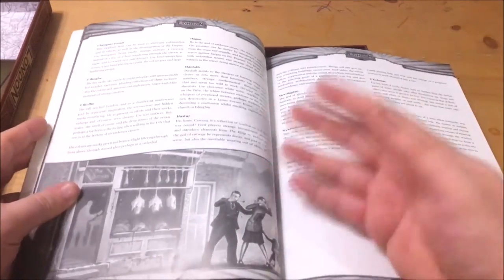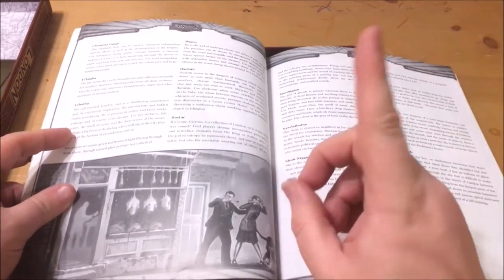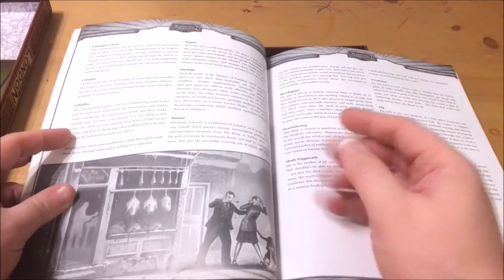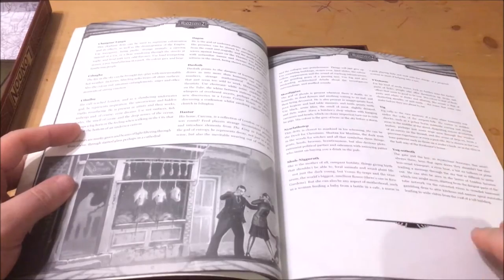It then goes on to discuss the powerful mythos deities and how they can be represented around the city, even allegorically. For example, Shub-Niggurath could be revealed through fertility symbolism like women feeding babies or pregnant women needing assistance.